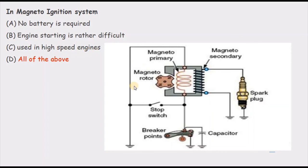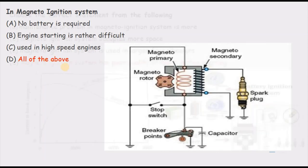The magneto ignition system is used in high-speed engines because at high speeds the magneto rotates fast, the induced EMF increases, and the spark intensity increases — so there is no problem at high speeds. All three statements are correct, so the correct answer is D — all of the above — for the magneto ignition system. Thank you.